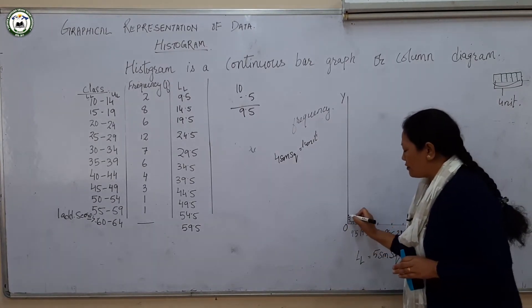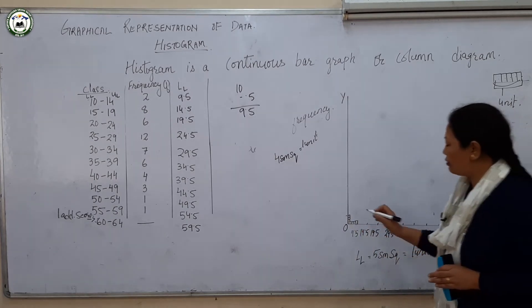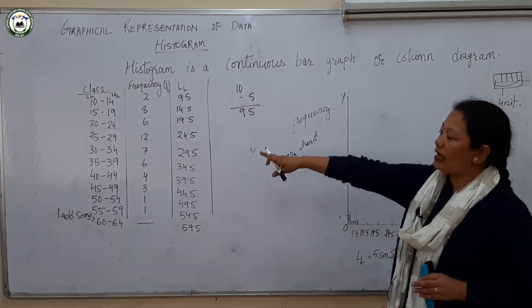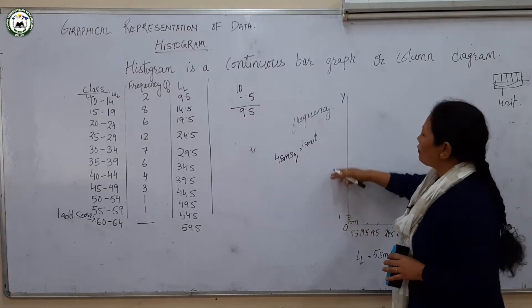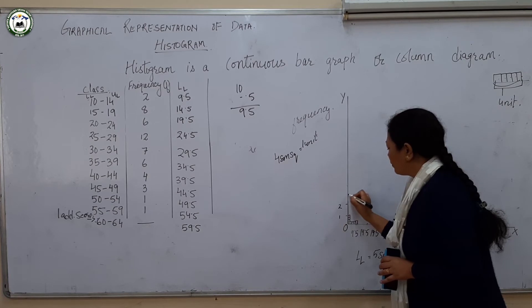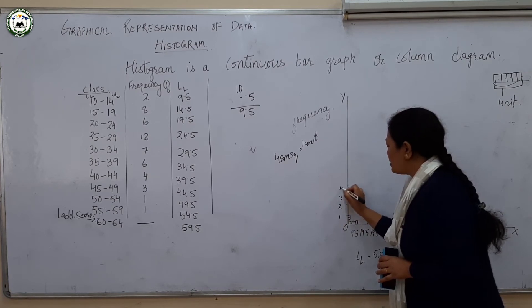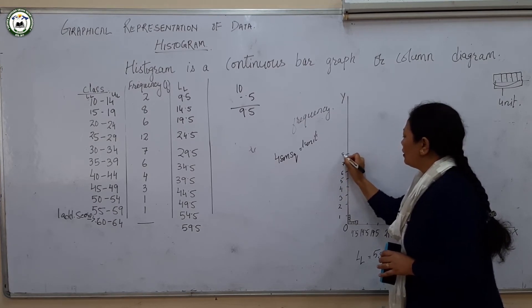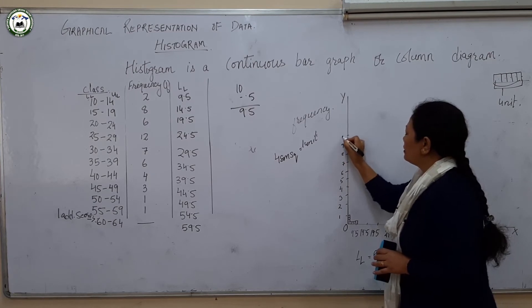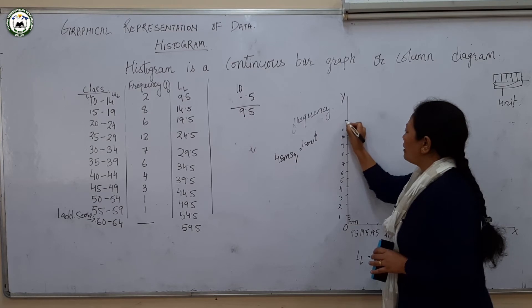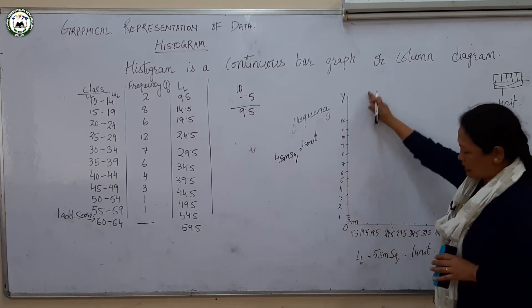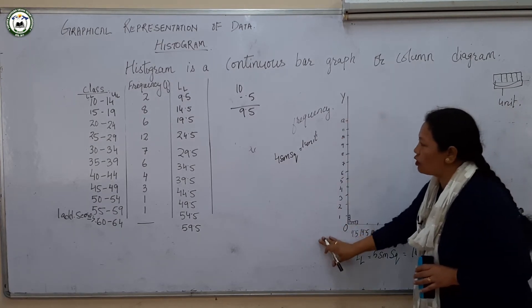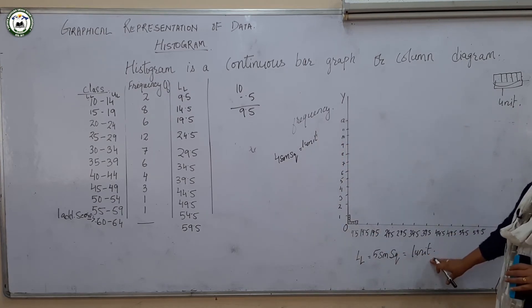So on the y-axis you have taken 4 small squares equal to 1 unit, which means that 4 small squares represent frequency 1. Your highest frequency is 12, so you go on writing 1, 2, 3, 4, 5, 6, 7, 8, 9, 10, 11, and 12 — each with 4 small squares. I have already taken 4 small squares for frequency and 5 small squares for the lower limit.